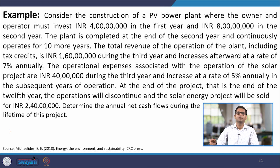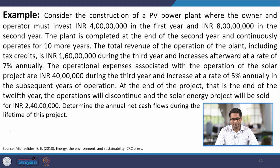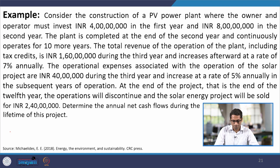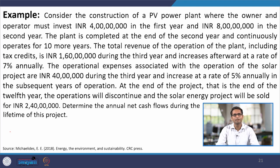Let us try to understand how these costs play out over the life of a plant through a simple example. Consider the construction of a simple PV power plant where the operator plans to invest 4 crore rupees in the first year and 8 crore rupees in the second year, bringing the total plant cost to around 12 crores. The plant is expected to be completed by the end of two years, and from the onset of the third year it is expected to generate revenue — including different incentives — of around 1 crore 60 lakhs per year, expected to increase at a rate of 7 percent annually.